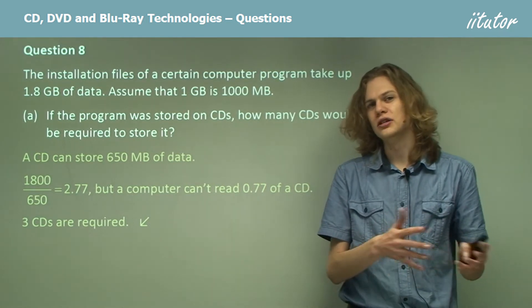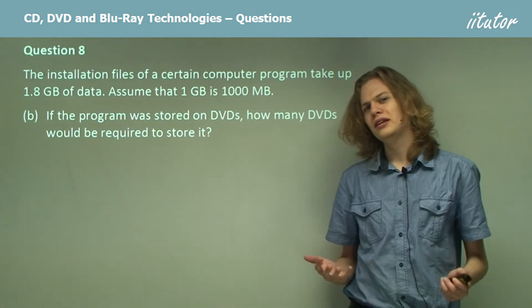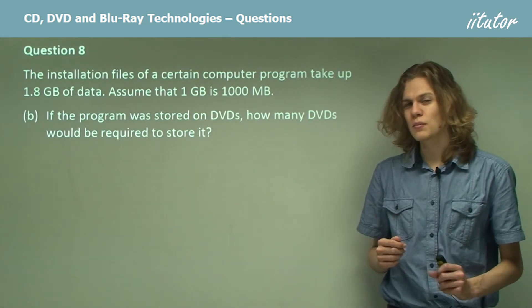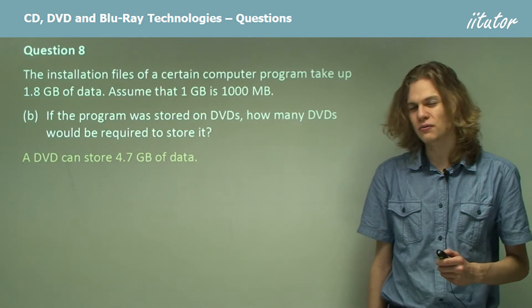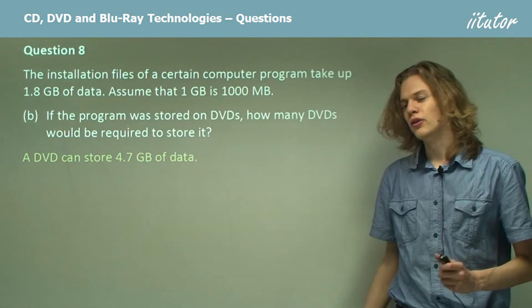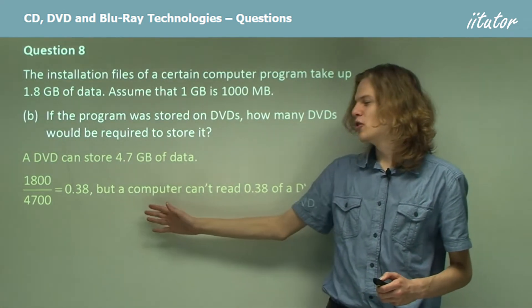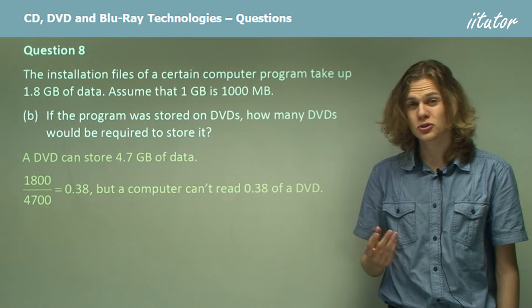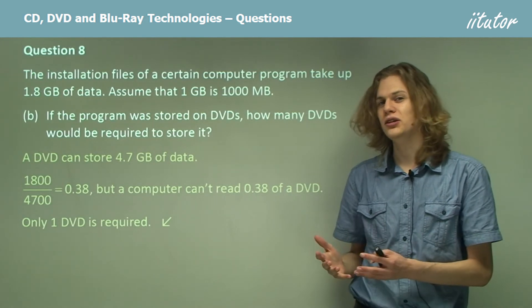What if instead we stored the program on DVDs? How many would we need? A DVD can store 4.7 gigabytes of data — a very large amount. Since all the installation files are only 1.8 gigabytes, dividing 1.8 by 4.7 gives us 0.38. We can't use 0.38 of a DVD, so we round up and need only one DVD for the whole program, with a lot of space left over.